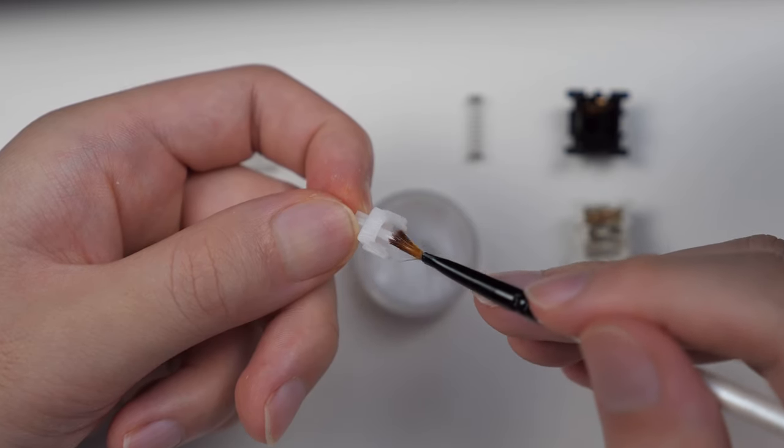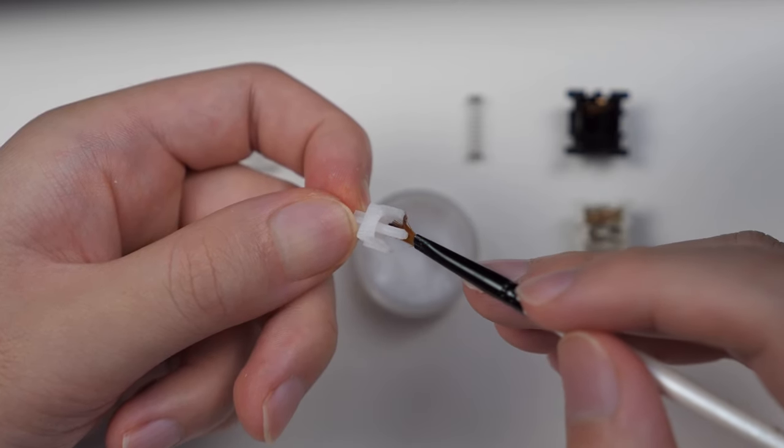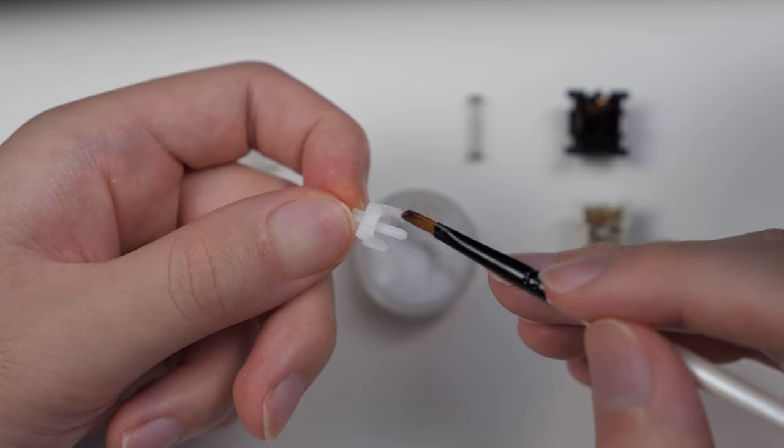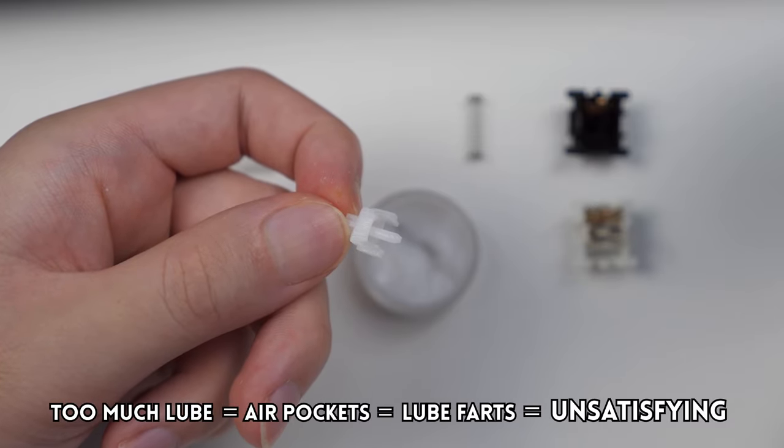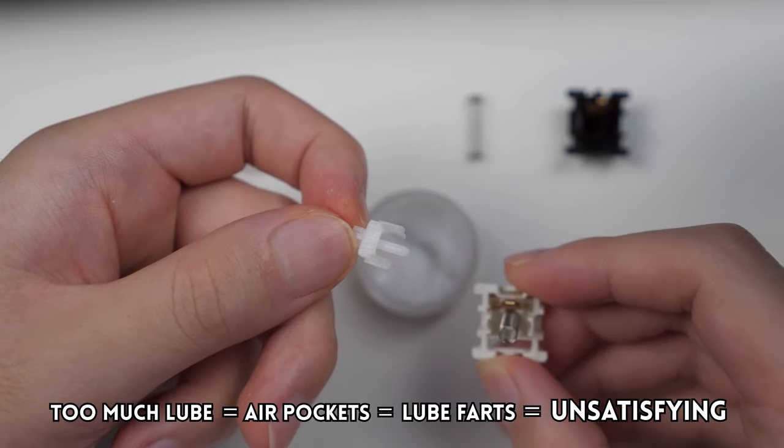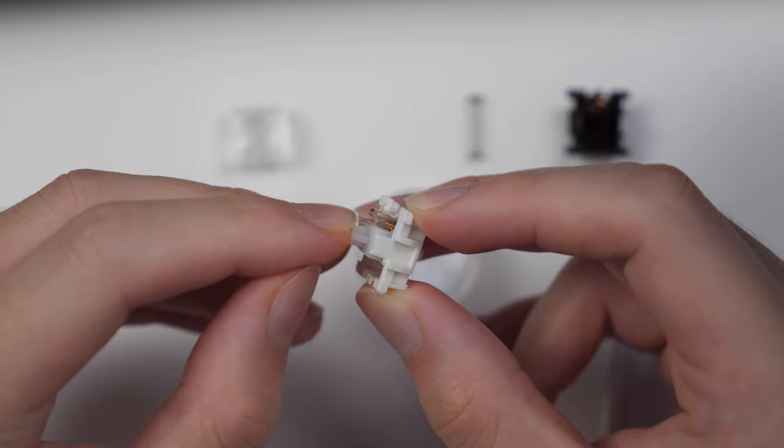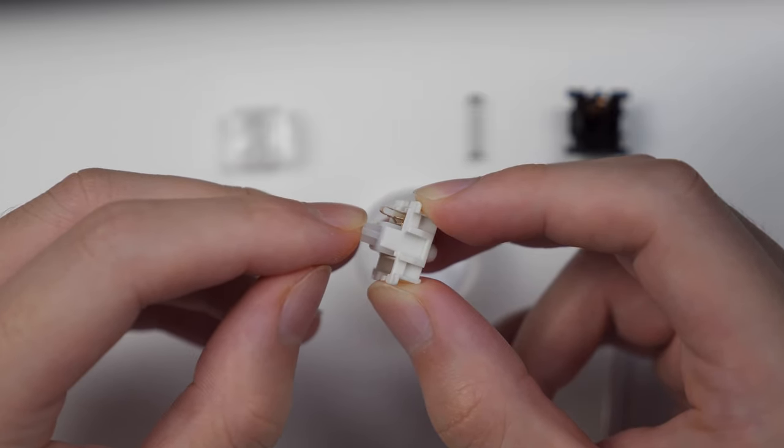You can also lube the pole on the bottom of the stem, but this part is not as important to lube, but if you do, make sure that you use small amounts, because too much can result in air pockets, which result in lube farts when pressing down on the switch. After all your lubing on the stem is done, place the stem onto the spring.